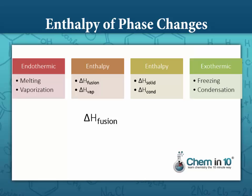The enthalpy of fusion is the opposite of the heat of solidification. If it requires a certain amount of heat to melt something, it's going to require the exact same amount of heat to be removed in order to solidify it — so they're opposite signed. The enthalpy of fusion, since melting is endothermic, is a positive number, whereas the enthalpy of solidification, which requires removing energy, is negative. Negative enthalpy means exothermic; positive enthalpy means endothermic.